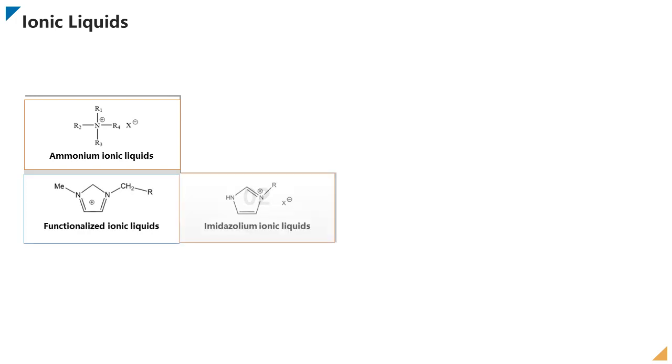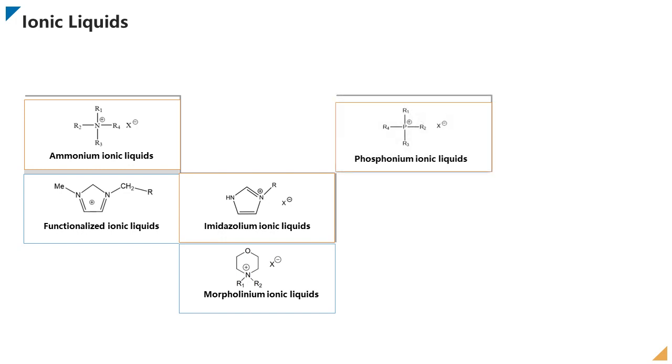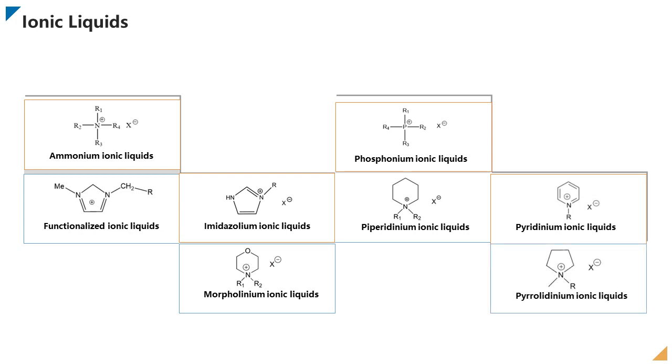Several kinds of ionic liquids are being widely used, including ammonium ionic liquids, functionalized ionic liquids, imidazoleum ionic liquids, morpholineum ionic liquids, phosphonium ionic liquids, piperidinium ionic liquids, pyridinium ionic liquids and pyrrolidinium ionic liquids.